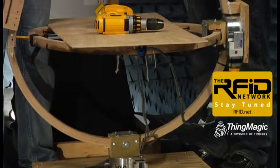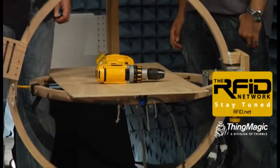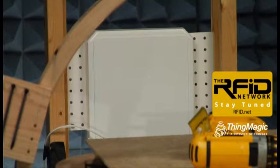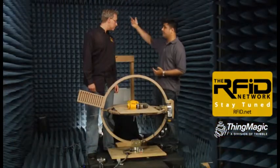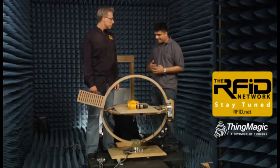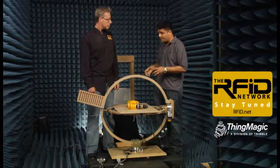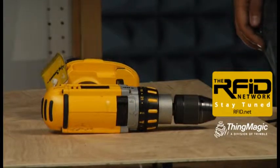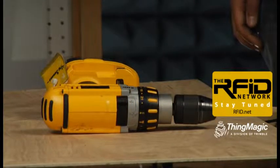In front of me I have this wagon wheel setup that's completely wooden. There is no metal, so you don't get any reflections or interference. There's an antenna that's powered by a ThingMagic reader that's kept outside the anechoic chamber. The goal of this test is to find out the best placement of a tag on a metal such as this tool so that you can get the farthest distance out of it while reading it.